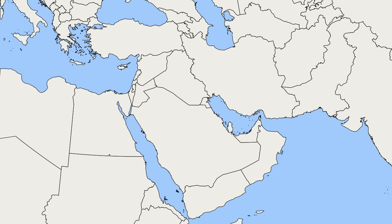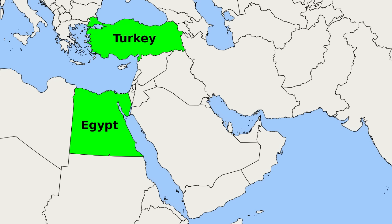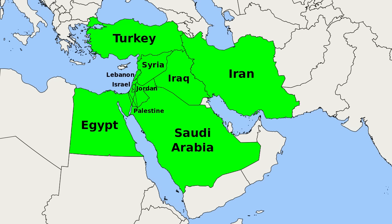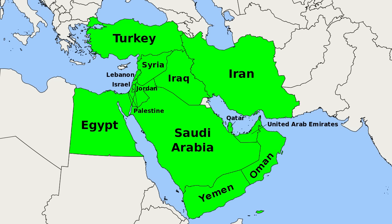It has no strict definition, but usually includes Egypt, Turkey, Iran, Syria, Iraq, Israel, Palestine, Lebanon, Jordan, Saudi Arabia, Yemen, Oman, United Arab Emirates, Qatar, Bahrain, and Kuwait. Afghanistan and Cyprus are sometimes included in the definition, but those countries could be their own videos.